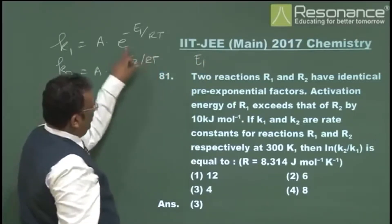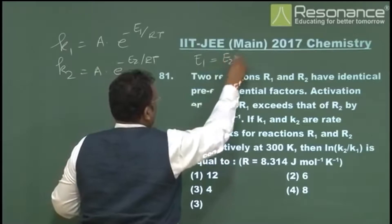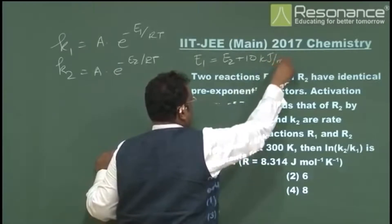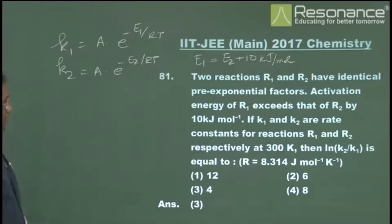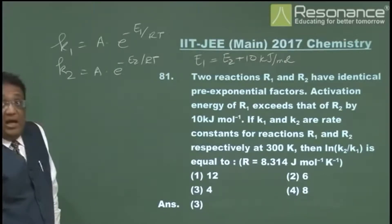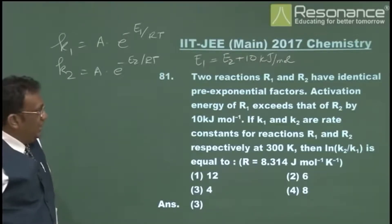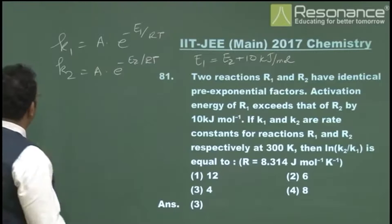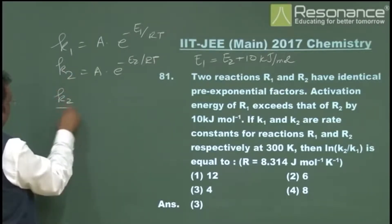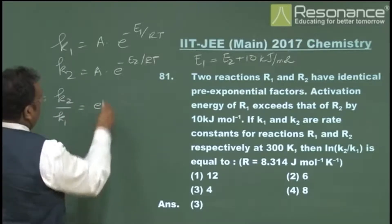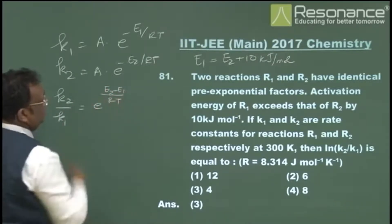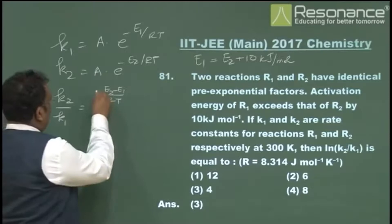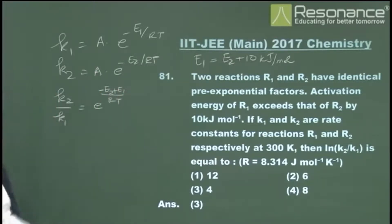That means E1 = E2 + 10 kJ/mol — keeping units because they're important. If K1 and K2 are rate constants for R1 and R2 respectively at 300 K, we need to find ln(K2/K1). We divide and take logarithms: K2/K1 = e^((E2 − E1)/RT), so ln(K2/K1) = (E1 − E2)/RT.